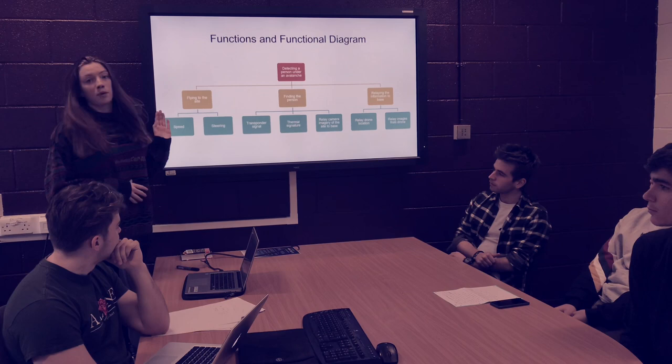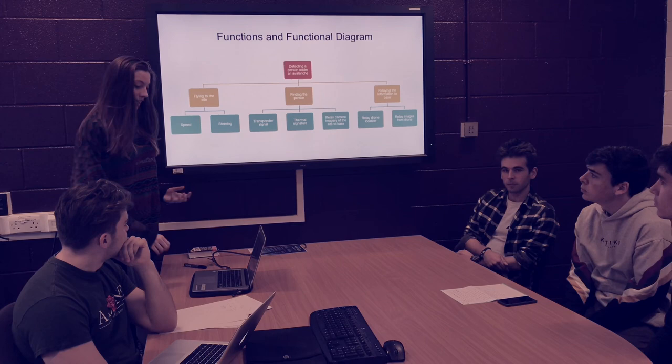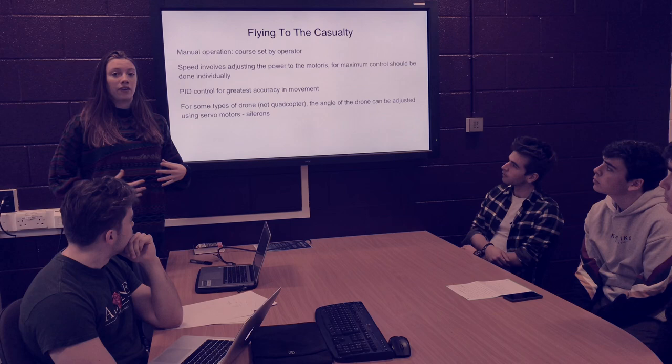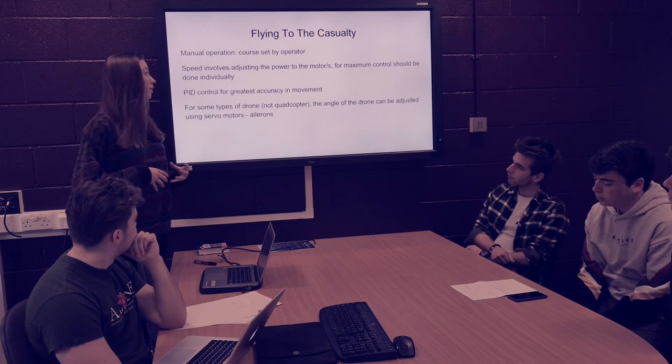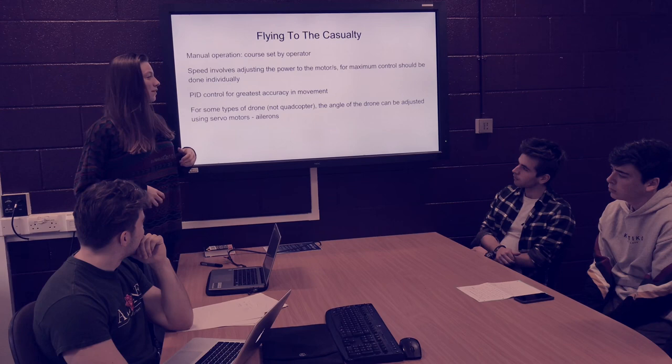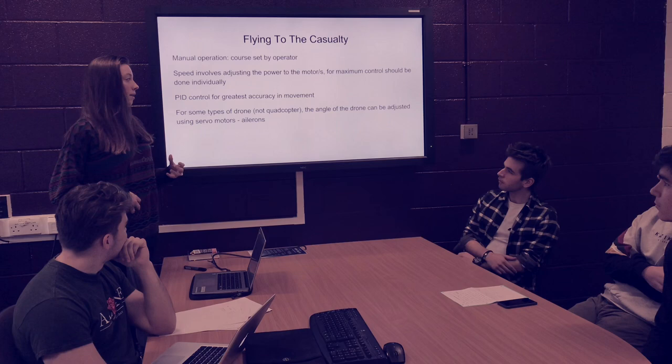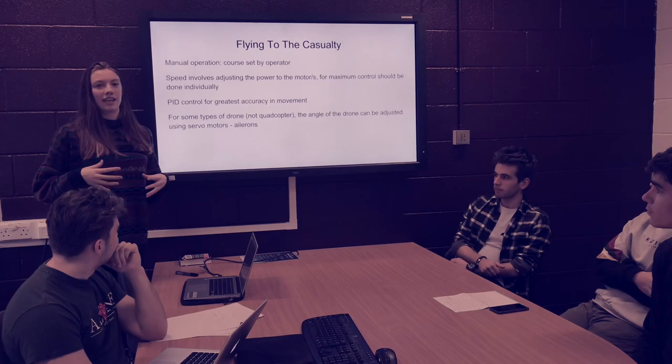For example, flying to the site has to be split into both speed and steering, as both the speed and direction are important. This is set by the operator so we don't need automatic control — it's basically done by remote control. However, proportional-integral-derivative (PID) control is useful for more accuracy in movement and less error. For some types of drone but not the quadcopter, the angle can be adjusted using servo motors driving the ailerons.